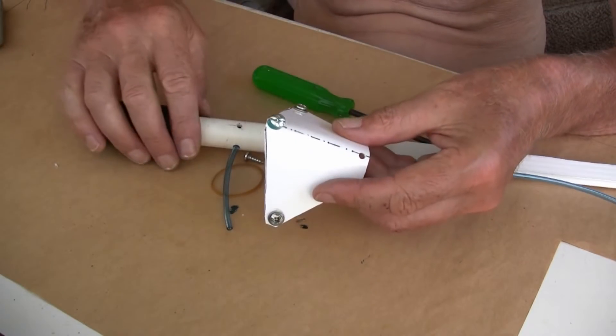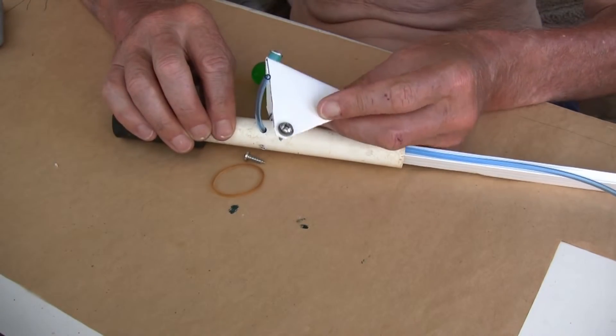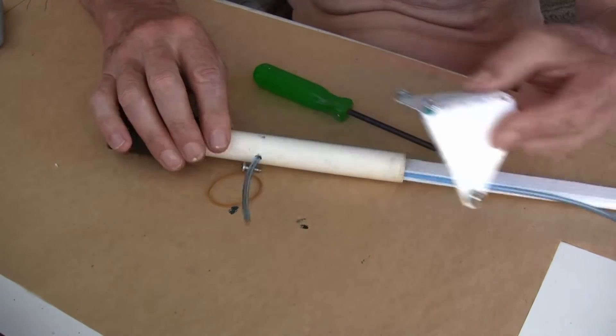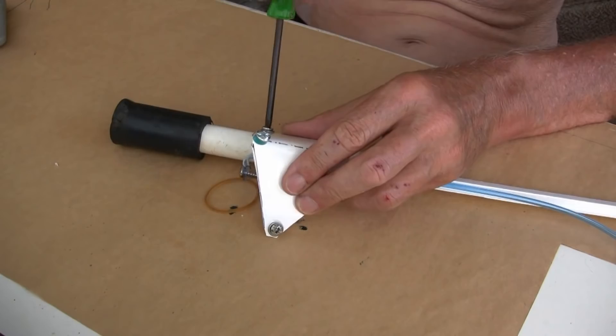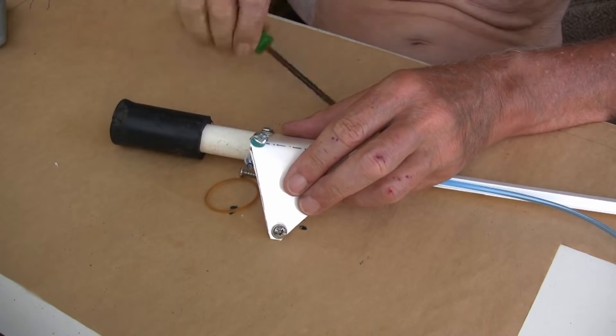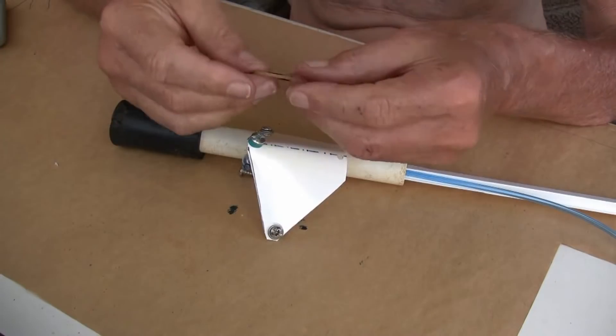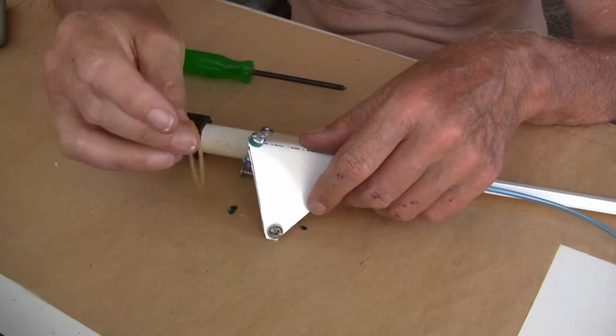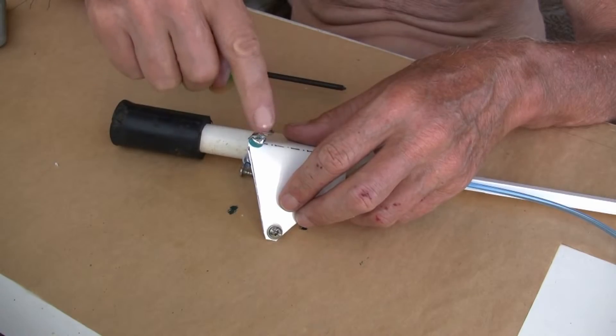This bracket gets screwed into holes, pivoting holes. Before the next spring is put in I have to put in this rubber return spring which hooks on the screw here.